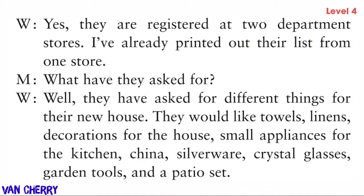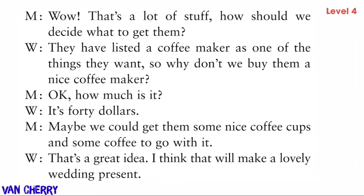What have they asked for? Well, they've asked for different things for their new house — they would like towels, linens, decorations for the house, small appliances for the kitchen, china, silverware, crystal glasses, garden tools, and a patio set. Wow, that's a lot of stuff! How should we decide what to get them?